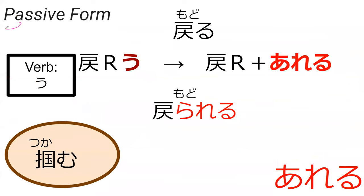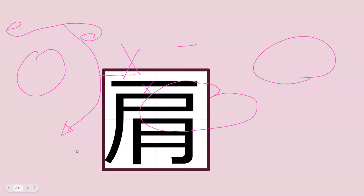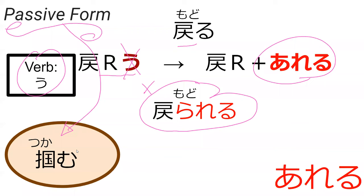So now we're looking at passive form, which we've probably seen before, specifically with u-verbs. Modoru is a u-verb — that's r plus u — so you take out that u and place it with areru to make modou-rareru, which means to have returned, like something else is doing the returning that's not the subject. How would you make passive form from tsukamu, which is to grasp? In the last reading I made a mistake between passive and causative — they both take rareru as the modifier at the end. It's a little different depending on whether it's a do-verb or a u-verb.